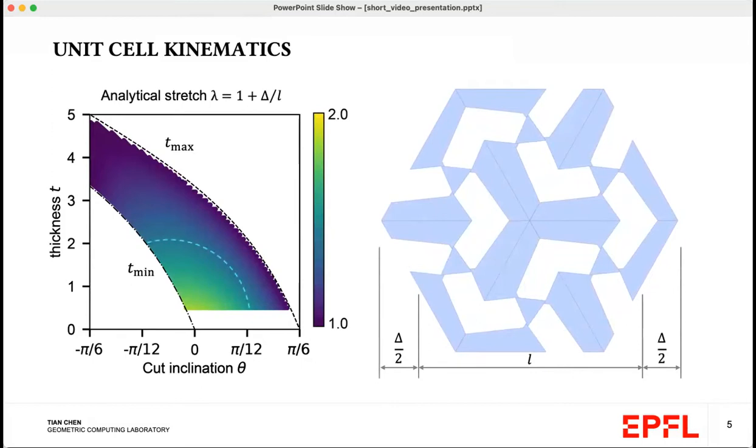Interestingly, for a given stretch factor, there are infinite amounts of T and theta pairs that can give us the stretch factor. Therefore, we come up with a mechanics-based selection criteria to choose the best unit cell for a given stretch factor.